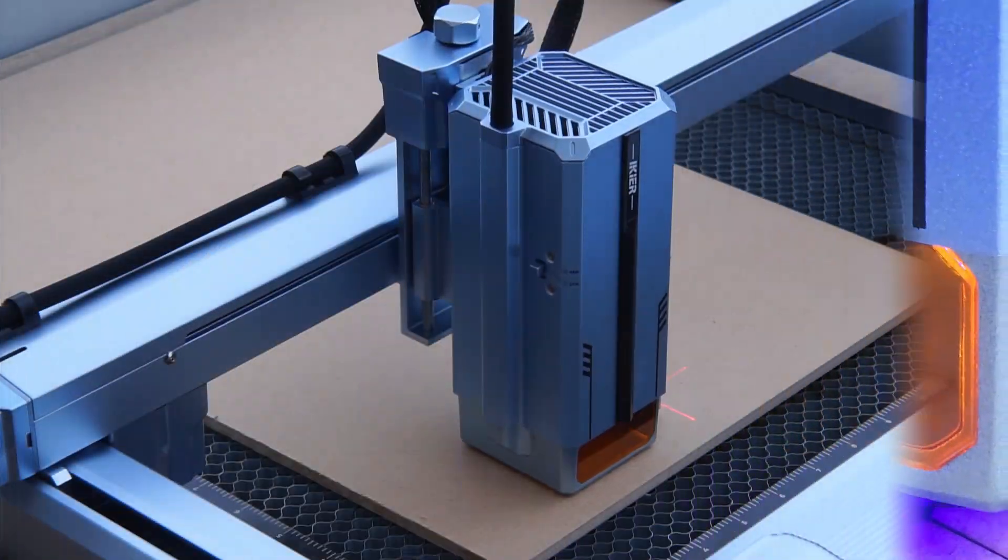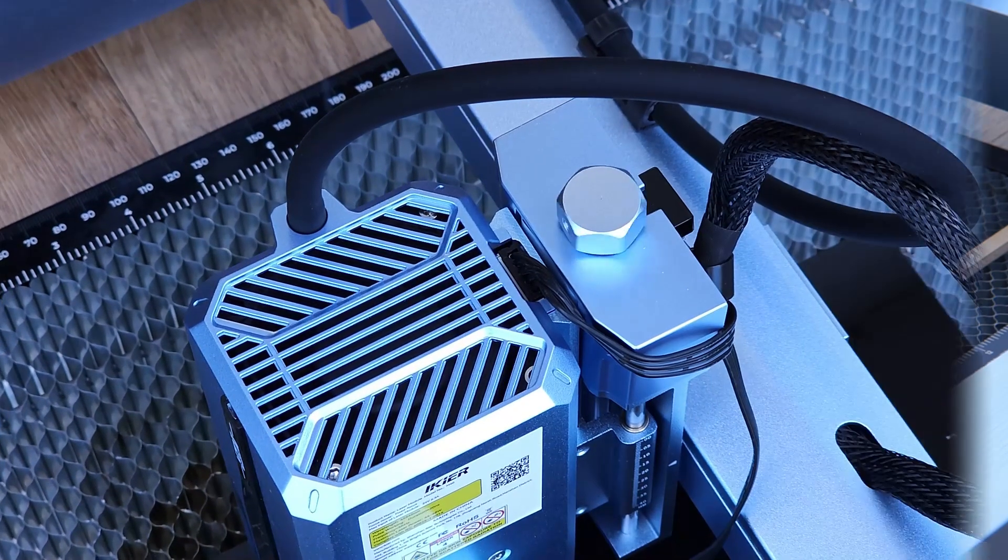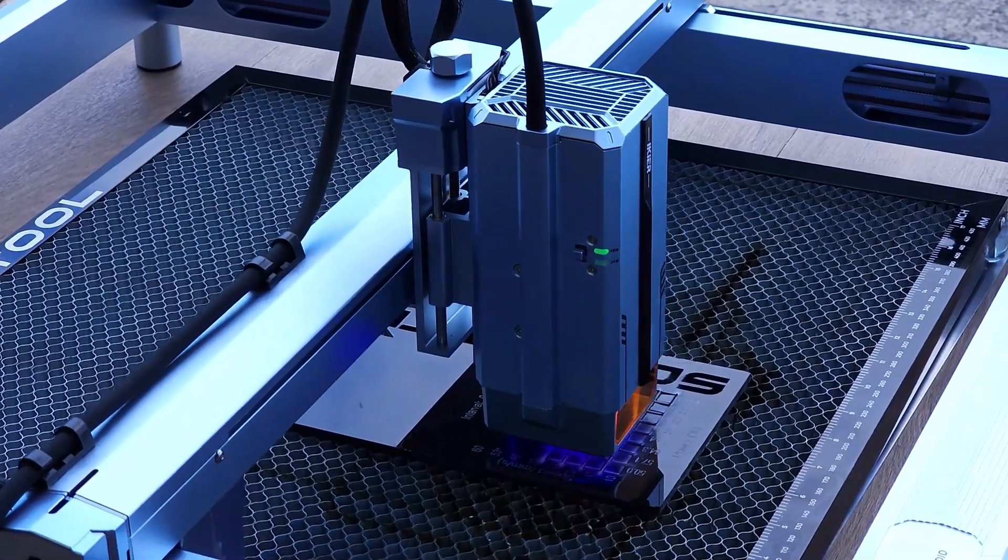Just like all the K1 machines, it has one-click autofocusing, and you can drop the Z-axis with each pass, enabling faster and cleaner cuts.